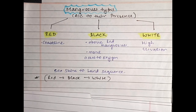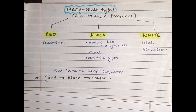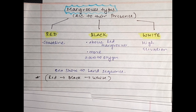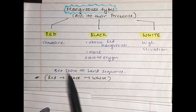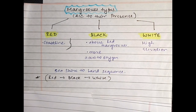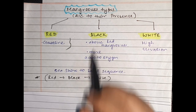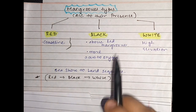Now let's look at mangrove types. We do classification according to their presence. We call them red type, black type, and white type. The first part — red mangroves — are found at the coastal line. The second category is black, which is present in between red type and white type mangroves. And the highest elevation mangroves are white mangroves.